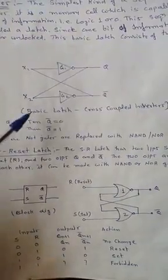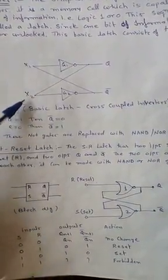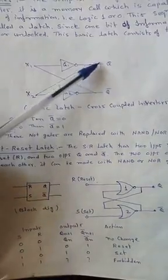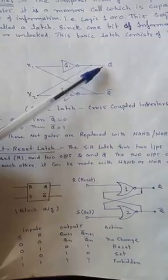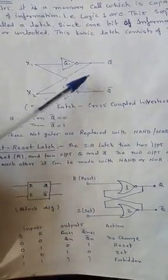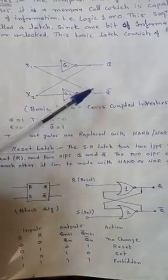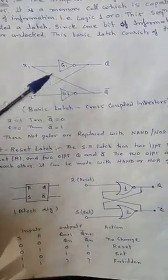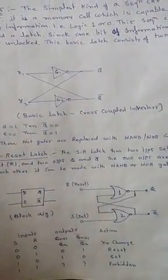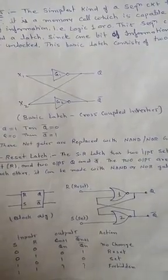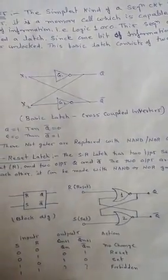There are 2 inputs x1 and x2, and there are 2 outputs q and q bar. The output q is called main output or primary output and the q bar is called complementary output.